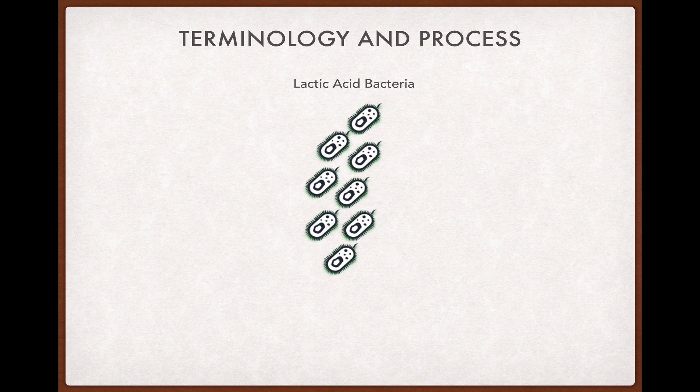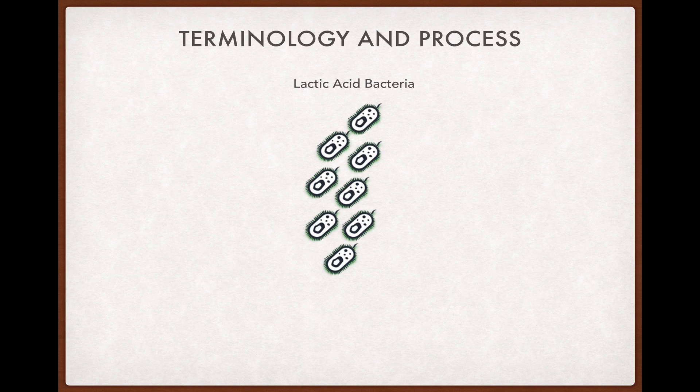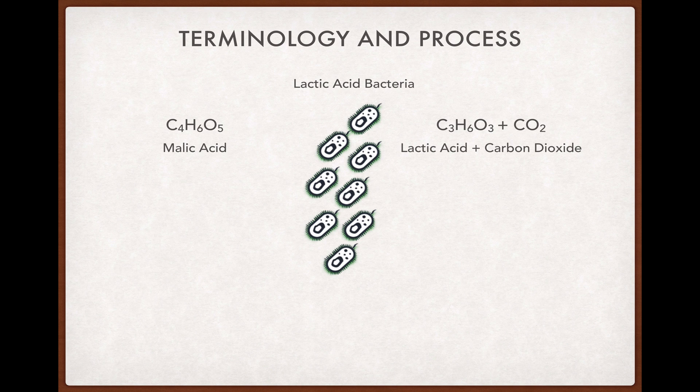Let's have a closer look. Under the influence of lactic acid bacteria — of which there are many strains, both natural and these days cultured commercially — malic acid, an acid most familiar to people as the key acid in green apples, is converted to lactic acid, an acid found in cultured milk products like yogurt and kefir, and also the compound that gives sourdough bread its sour taste.